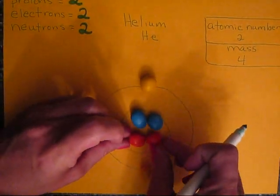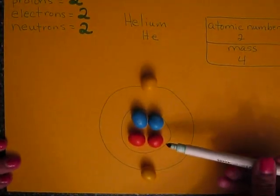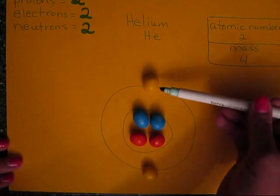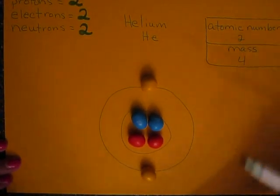This is a helium molecule. It has 2 protons, 2 neutrons, and 2 electrons. Its atomic number is 2 and its mass is 4.